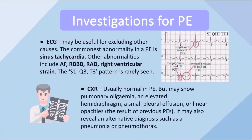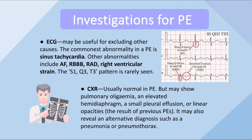Another investigation is the ECG. It is very important to know that most ECGs show sinus tachycardia, which is the most common finding. Patients could also have atrial fibrillation, right bundle branch block, right axis deviation, or right ventricular strain — all right-sided changes because pulmonary embolism affects outflow from the right ventricle. Sometimes we see the S1Q3T3 pattern: a deep S wave in lead 1, a Q wave and T-wave inversion in lead 3. However, only 10% of patients show this change and many patients may have a normal ECG.